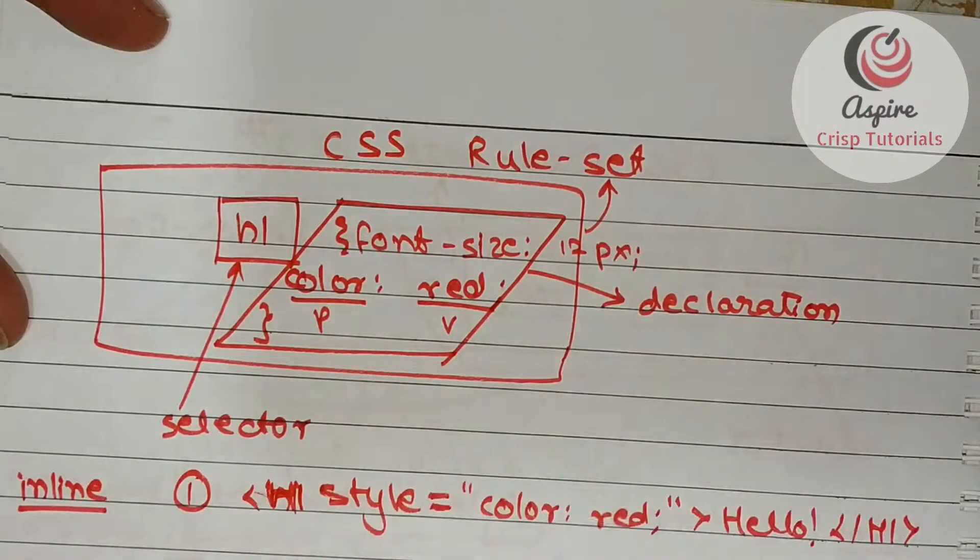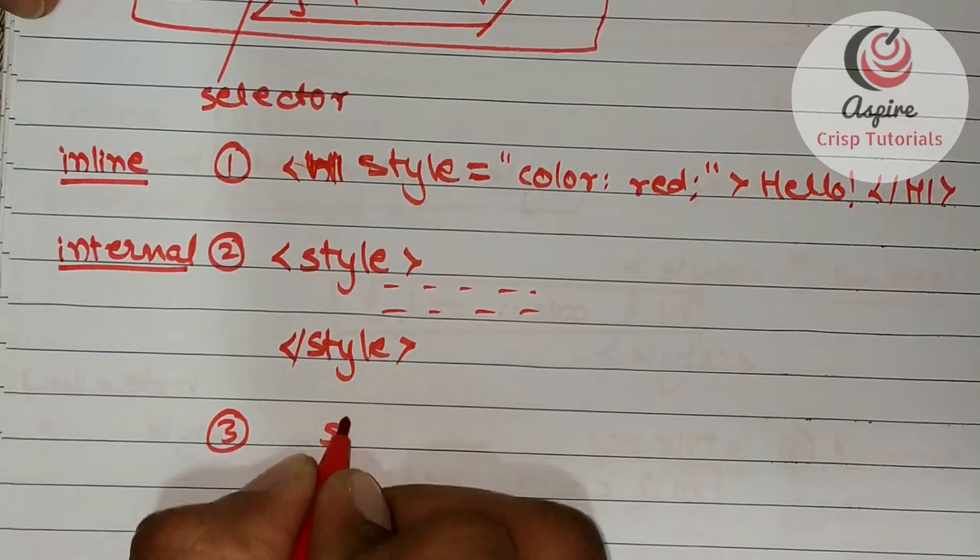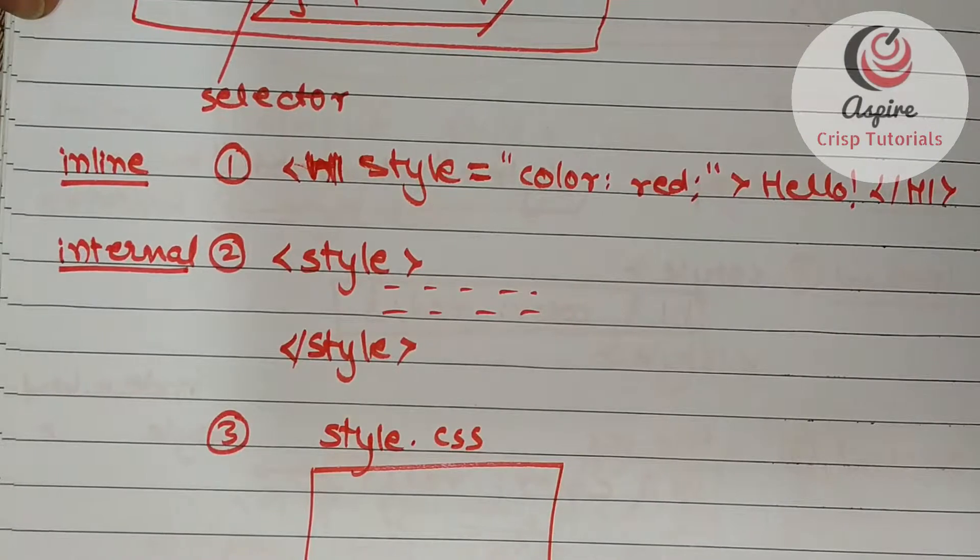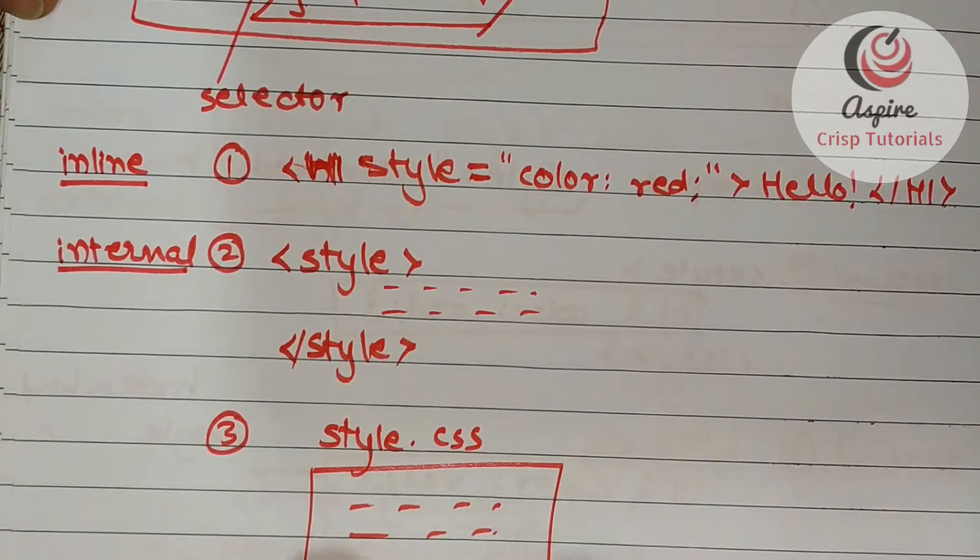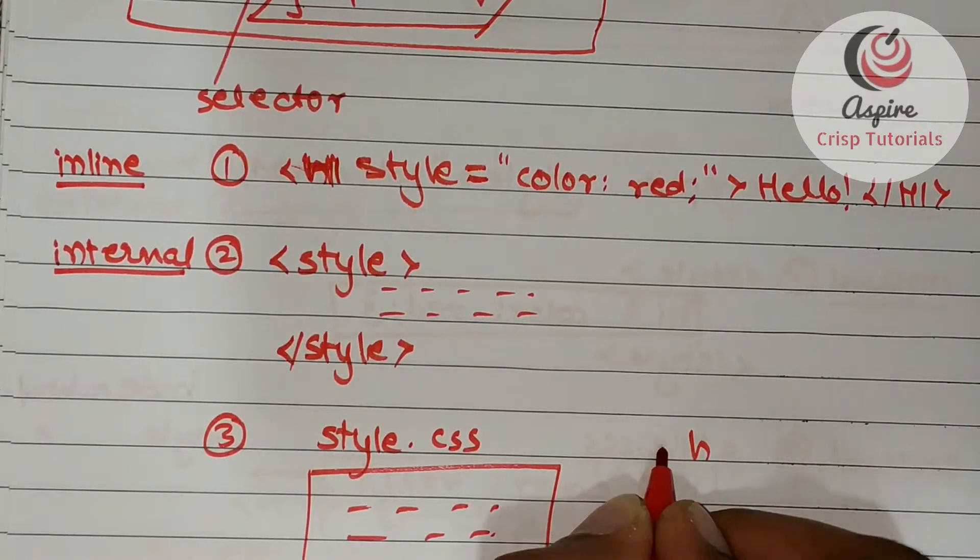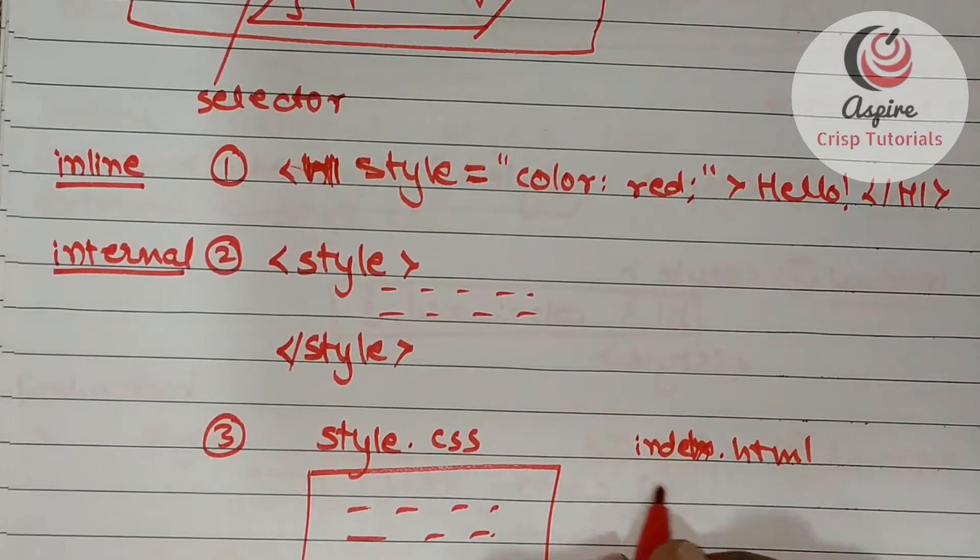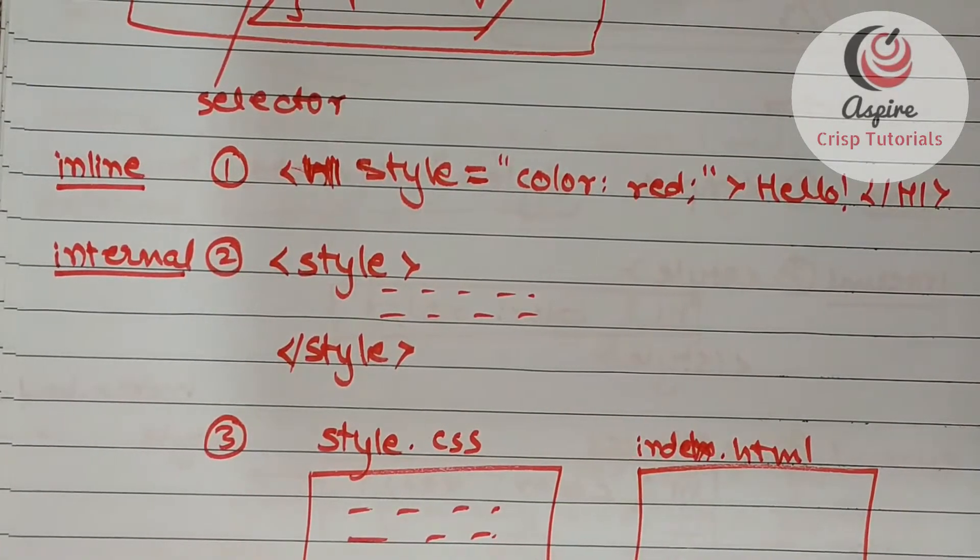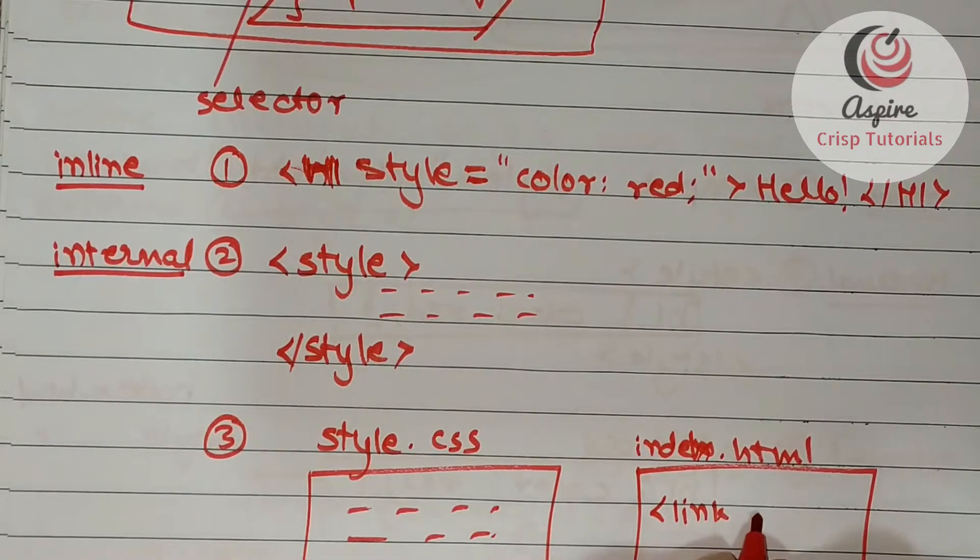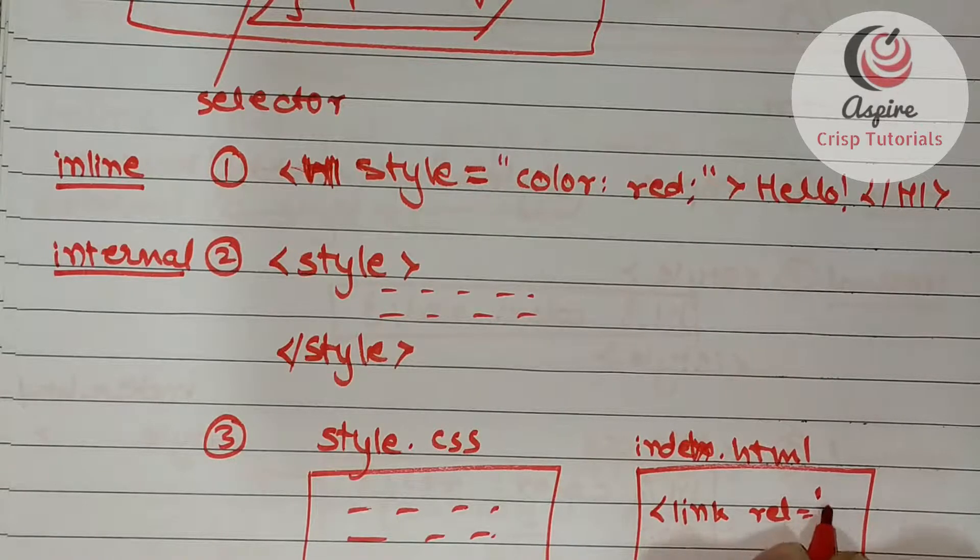And the third place where you can use the CSS rulesets is within a separate file. Say style.css file, you may write all the CSS rulesets that you want. And then within your HTML file, say index.html, at the beginning you may write link relation equal to stylesheet...